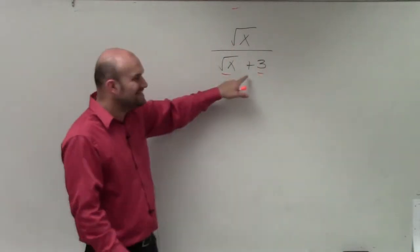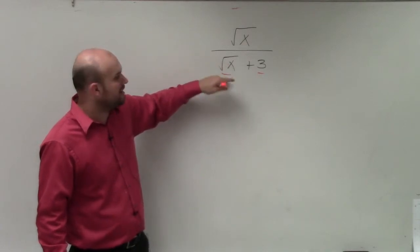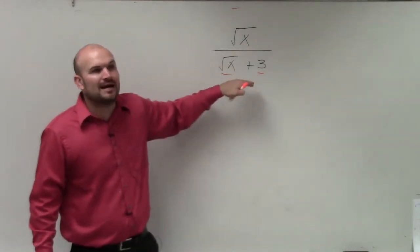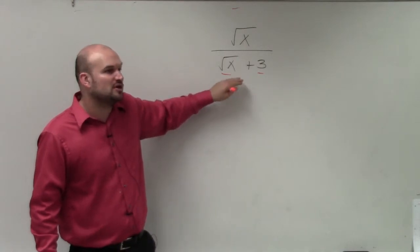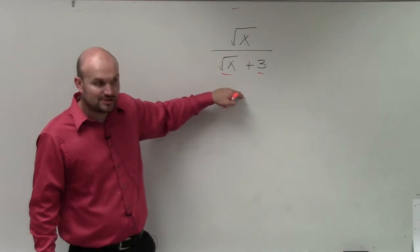Now the main important thing, we still need to get rid of our negative square root, or still need to get rid of the square root. However, it is a binomial, not a monomial. So I do not want to multiply by the square root. I need to multiply by the conjugate.